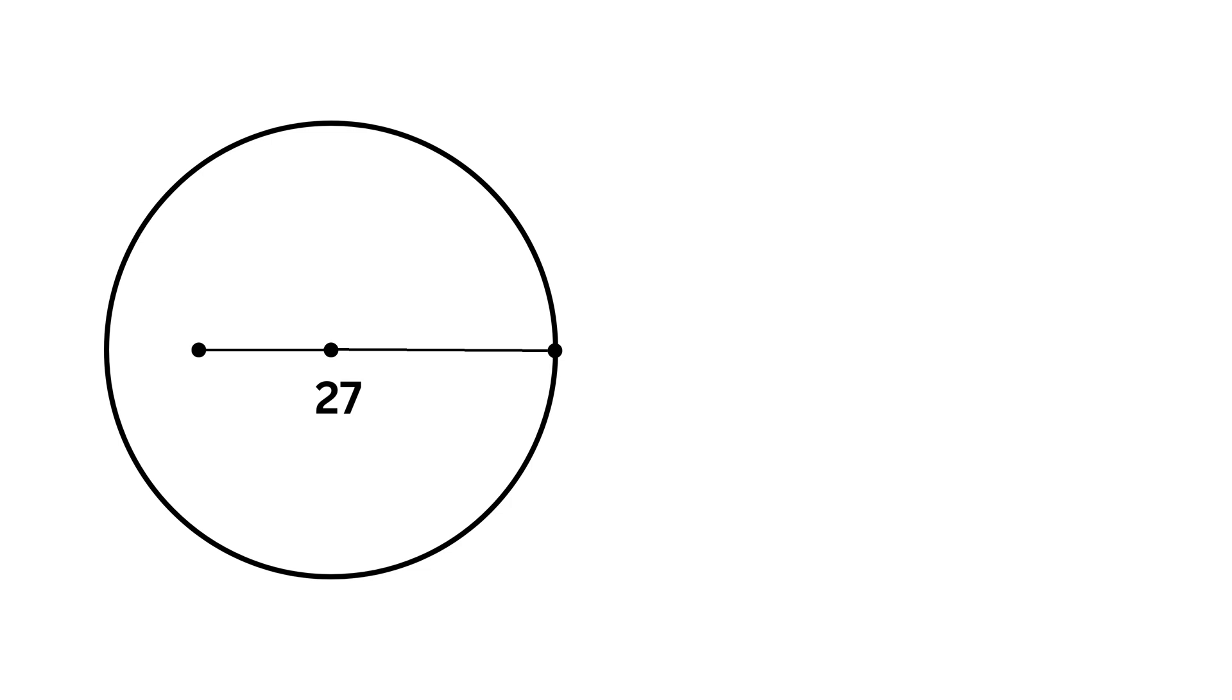Then from this point we draw a line perpendicular to this one such that it intersects the circle at this point and its length is 9 units. Our job is to find the radius of this circle.